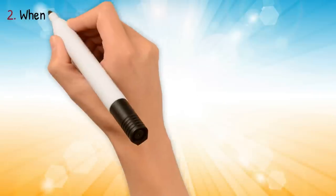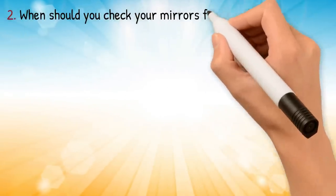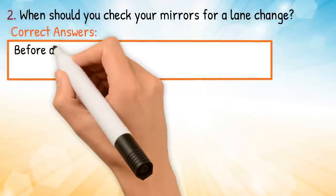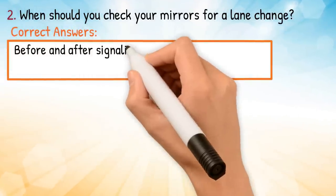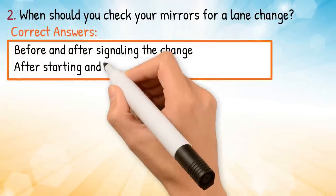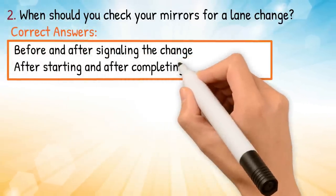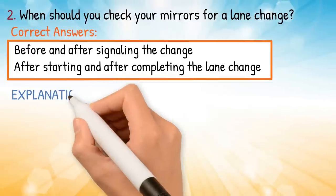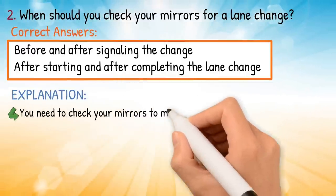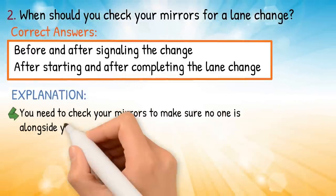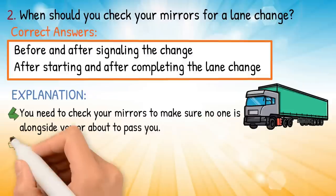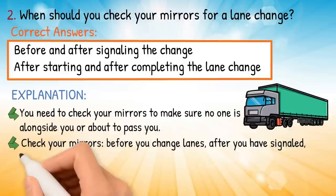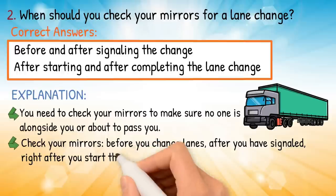Question two: when should you check your mirrors for a lane change? Correct answer: before and after signaling the change, after starting, and after completing the lane change. Explanation: you need to check your mirrors to make sure no one is alongside you or about to pass you. Check your mirrors before you change lanes, after you've signaled, right after you start the lane change.